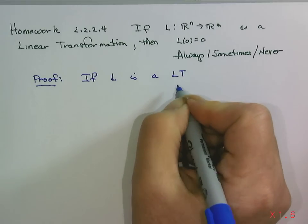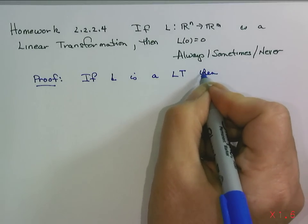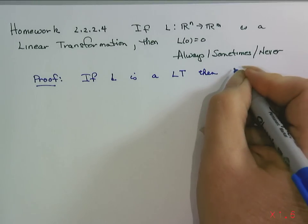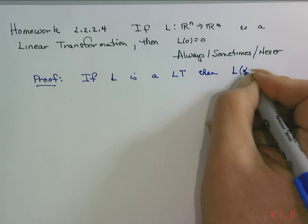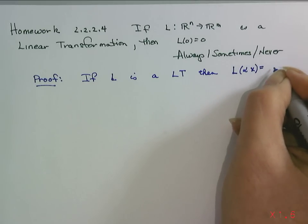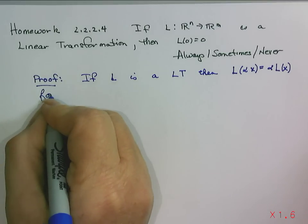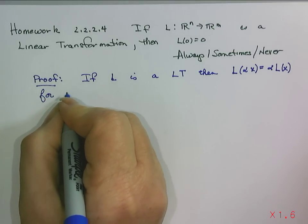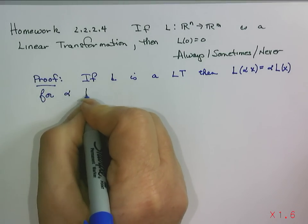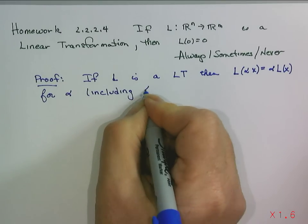I'm going to use LT for linear transformation. Then, if we look at L of alpha times some vector, that's supposed to be equal to alpha times L of x for all vectors x and alpha, including alpha equals 0.